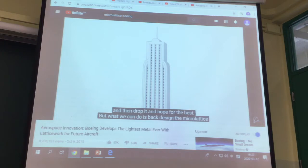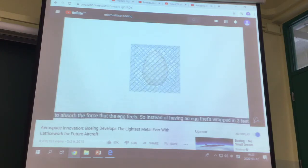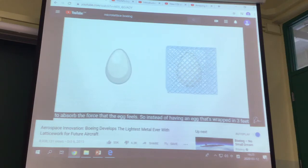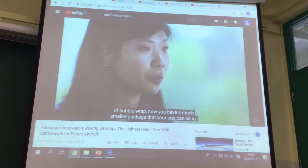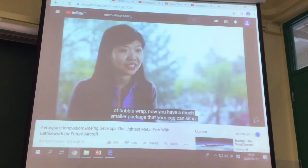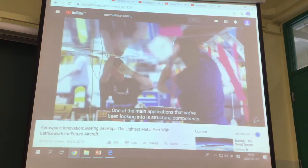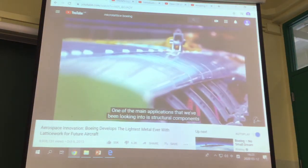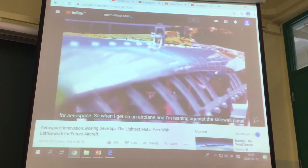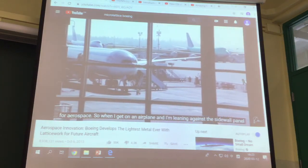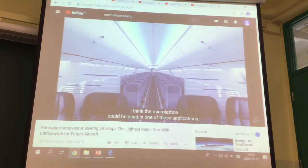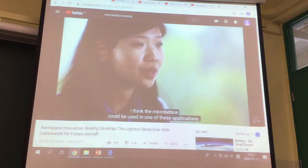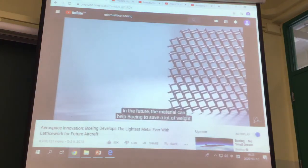But what we can do is back-design the micro-lattice to absorb the force that the egg feels. So instead of having an egg that's wrapped in three feet of bubble wrap, now you have a much smaller package that your egg can fit in. One of the main applications that we've been looking into is structural components for aerospace. So when I get on an airplane and I'm leaning against the sidewall panel, putting my luggage in the bin, or I'm walking along the floor panels, I think the micro-lattice could be used in one of these applications.